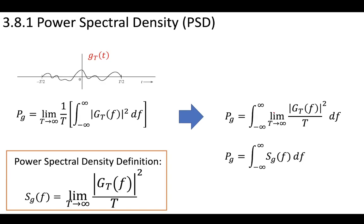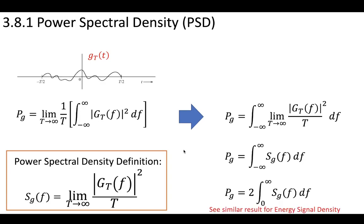We can write that the power of a signal is equal to the integration of the power spectral density — the PSD — from minus infinity to infinity. This is equivalent to 2 times the integral from 0 to infinity, showing symmetry across the y-axis. This is a similar result to what we obtained for the energy spectral density. We'll see you next time. Thank you.